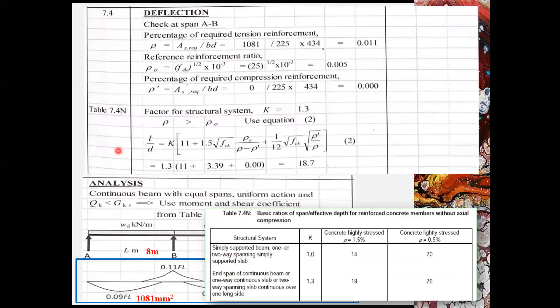In the second equation, few parameters are required. For example, k. The k can be obtained from table 7.4 and the basic ratios of span over effective debt. In one of the column here, k. It depends on the structure system. For example, is it a simple supported beam? Or is it a continuous beam? So here in this case, we have continuous beam. And we are checking span AB which is the end span of the beam. Therefore, the k is 1.3.